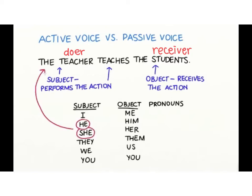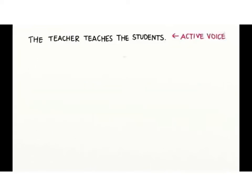In active sentences, subject pronouns can take the place of subjects. And object pronouns can take the place of the objects. This sentence, the teacher teaches the students, is an active sentence because the subject comes before the action and the object.